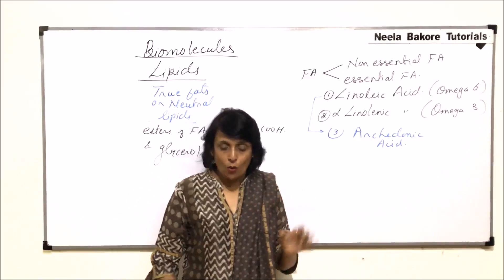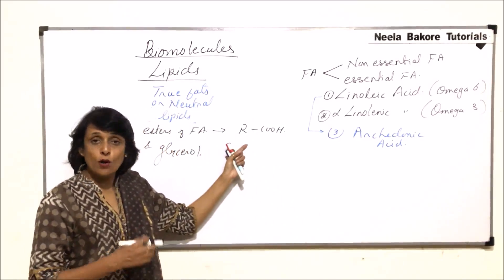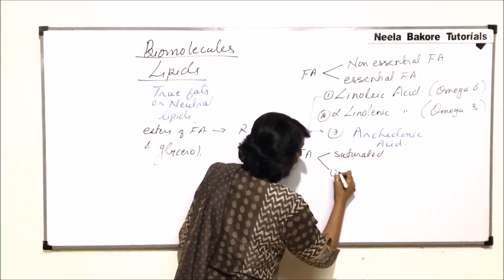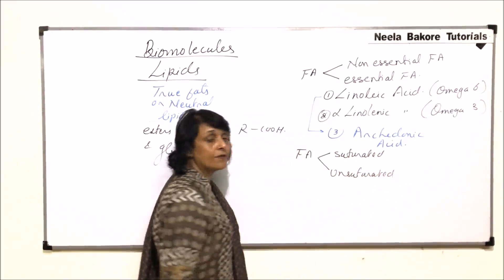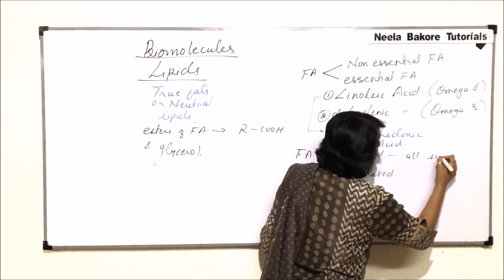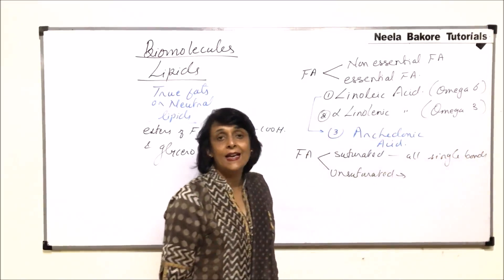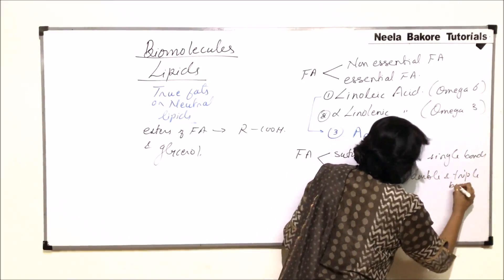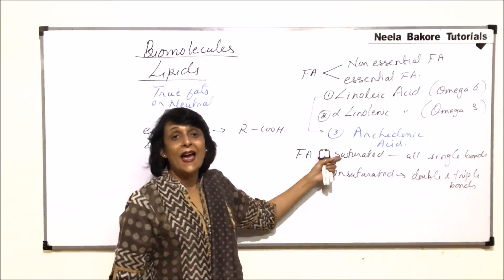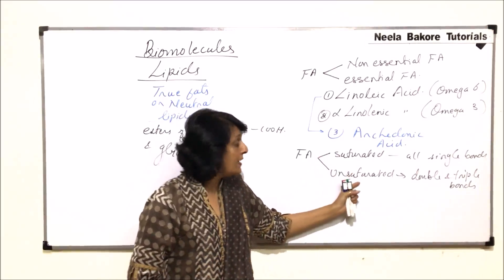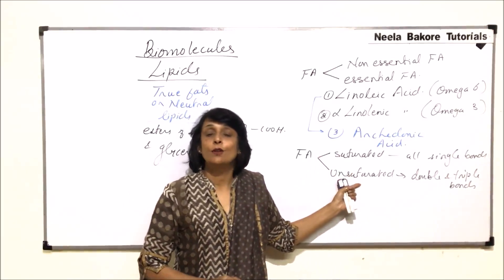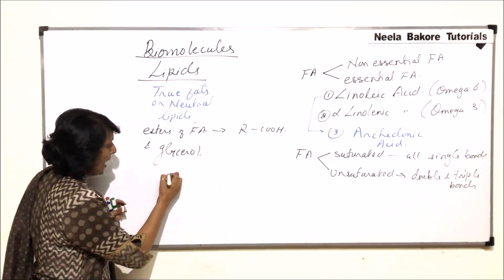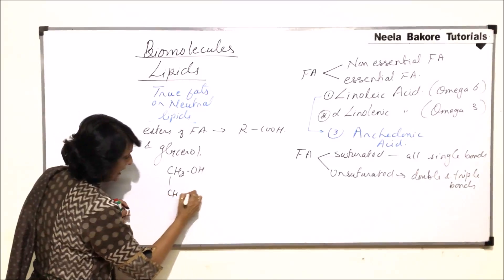Any other fatty acids other than these three are non-essential — our body can synthesize all of them. Fatty acids can also be saturated or unsaturated. Saturated fatty acids have all single bonds, and unsaturated fatty acids have double and triple bonds. If a saturated fatty acid is present in the fat, the fat will be called saturated fat; if it is an unsaturated fatty acid, the fat will be called unsaturated fat.